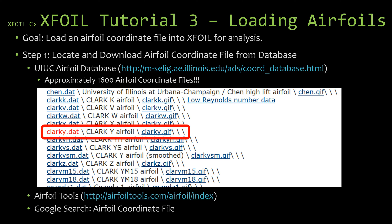There are two airfoil databases I would recommend. The UIUC airfoil database — UIUC stands for University of Illinois at Urbana-Champaign. This has a lot of airfoil coordinate files in different formats, so be careful as they're not all the same format. It also has a lot of really good reference material. The airfoil we are going to use in this tutorial is the Clark Y airfoil, which you can find by scrolling down in the UIUC database.